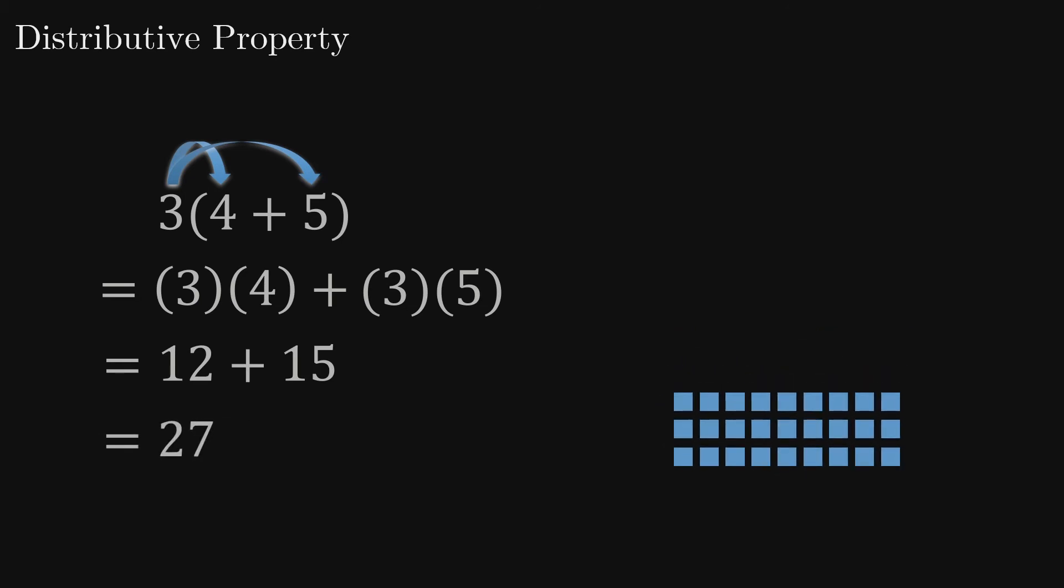Finally, to see why a negative times a negative gives a positive, consider this expression, in which we have negative 3 times the sum of 4 and negative 4.